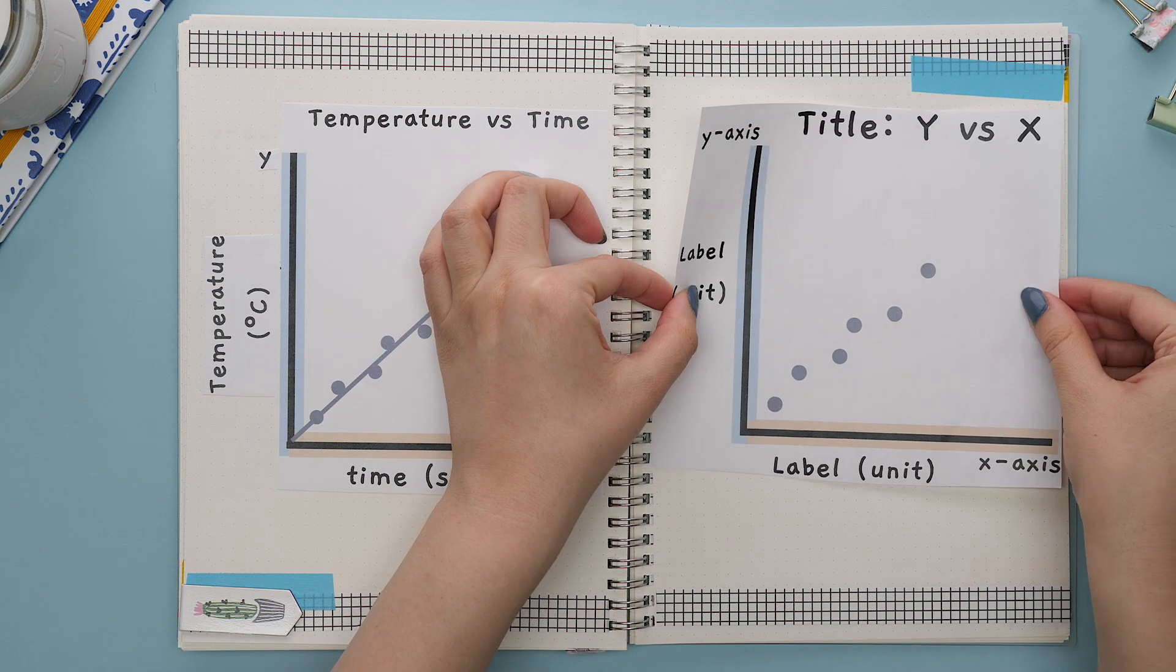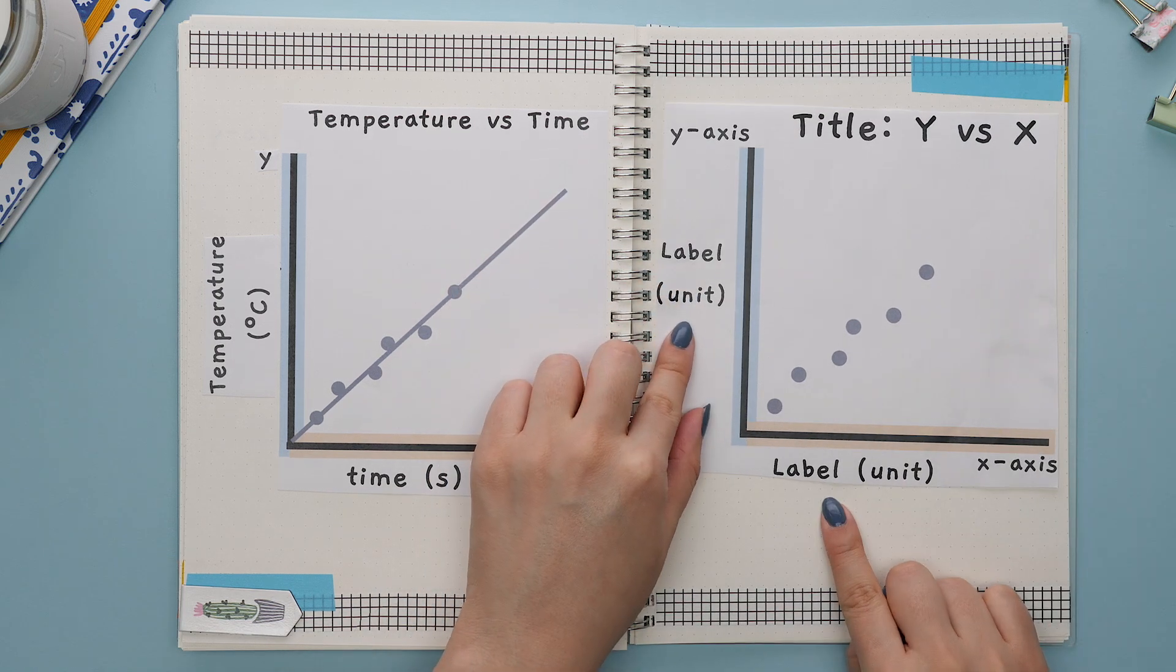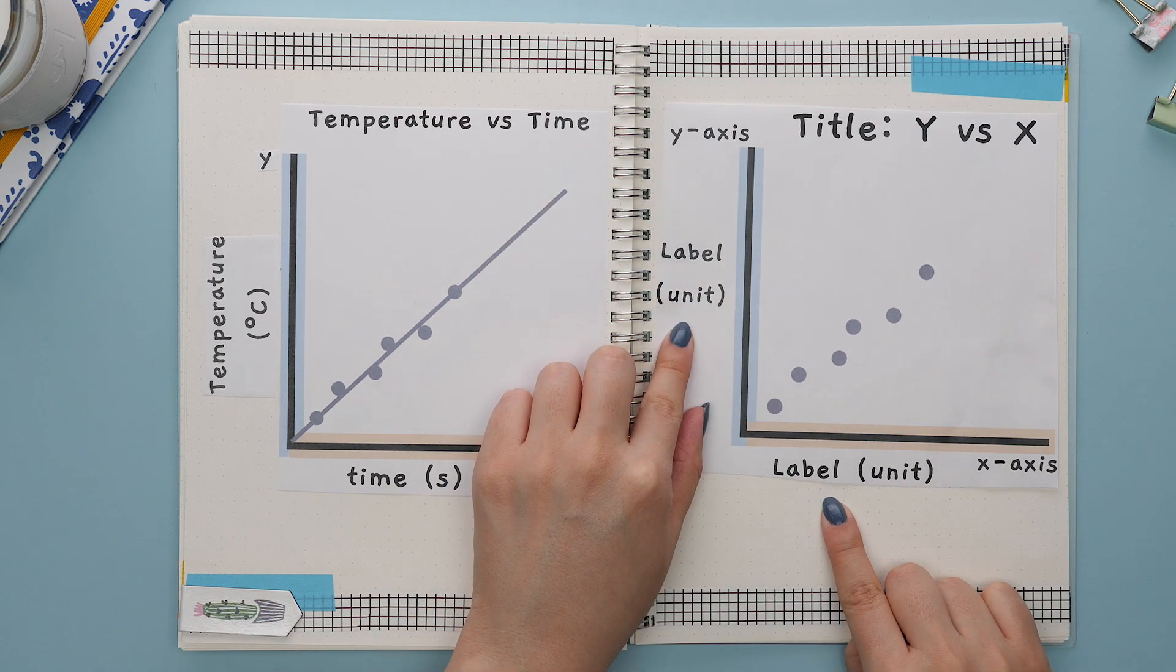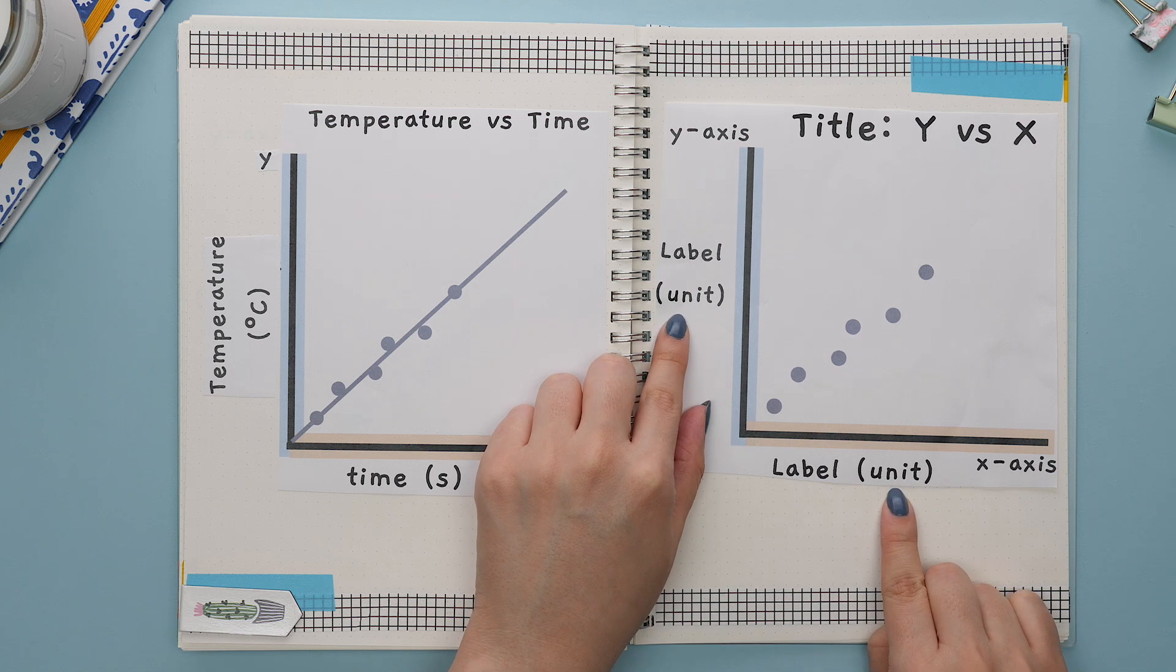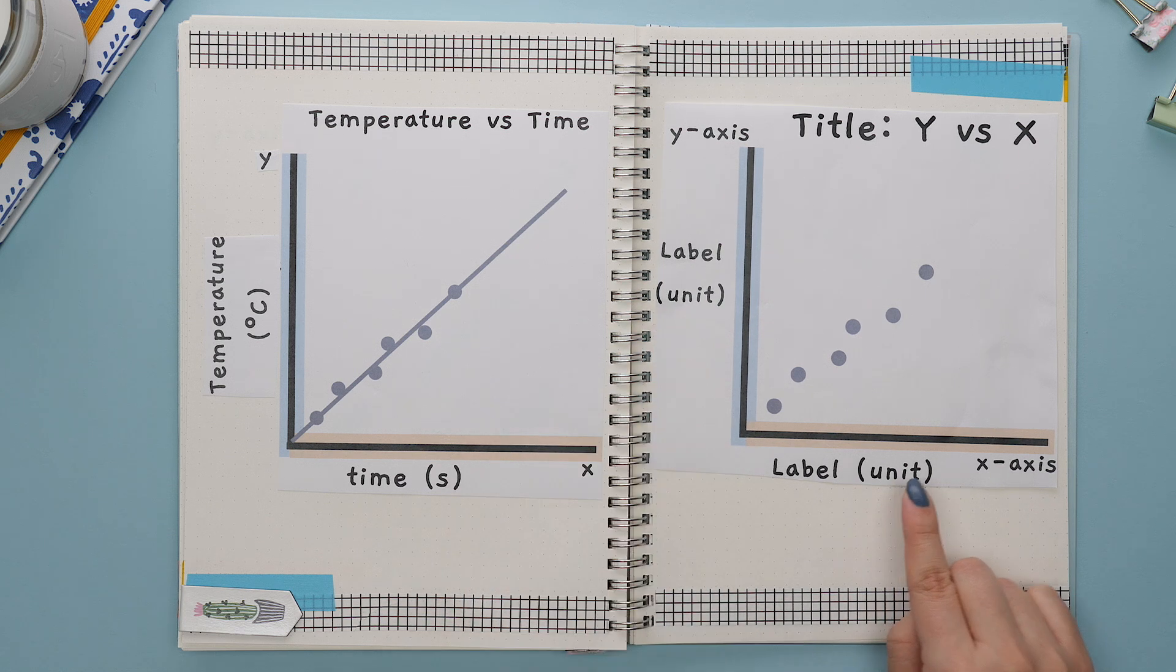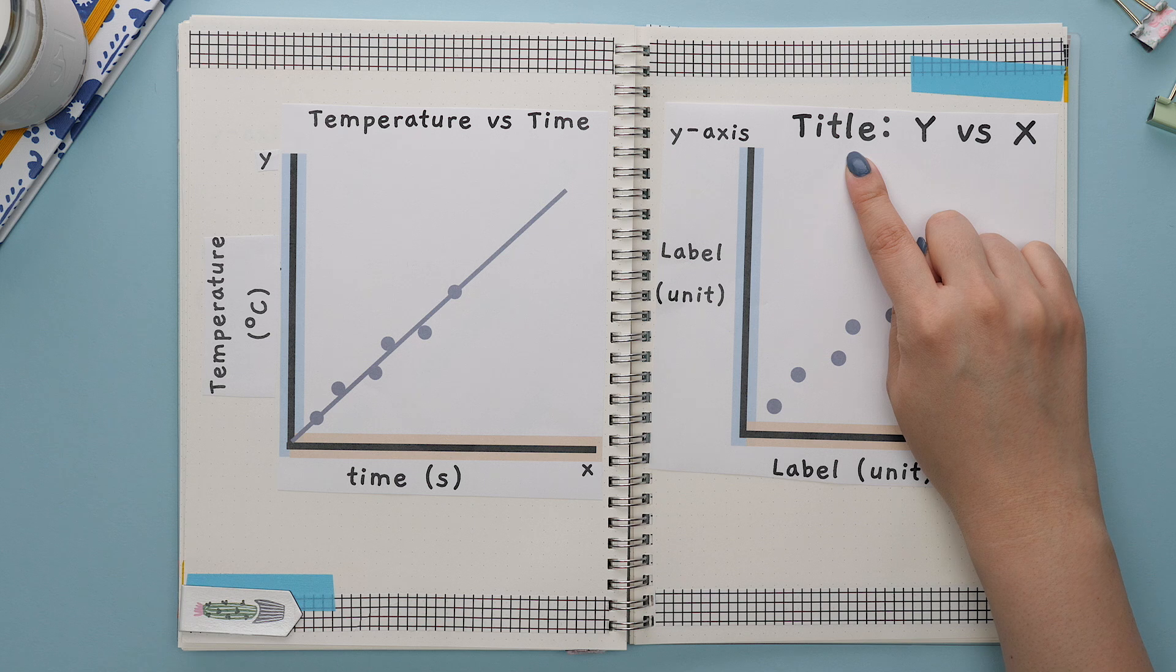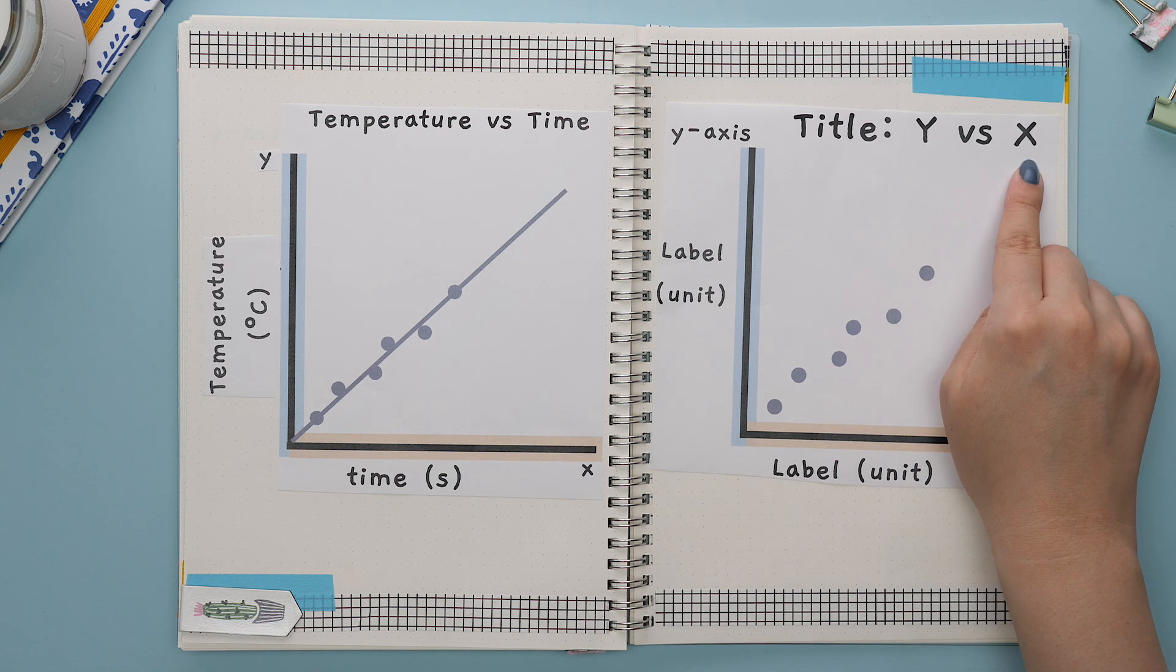We would also see that the y and x-axis will always be labeled and must show the unit of that measurement if possible. Next, there will always be a title that shows the y-axis versus the x-axis.